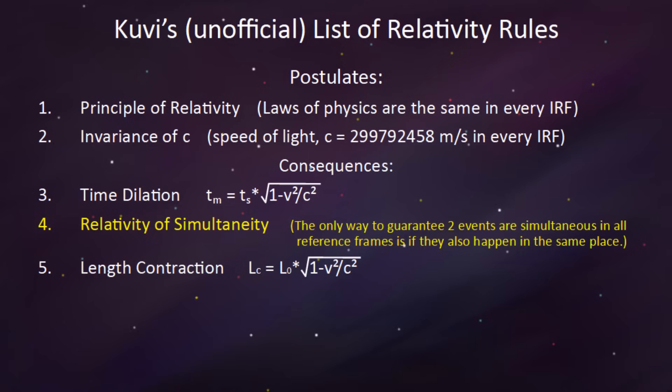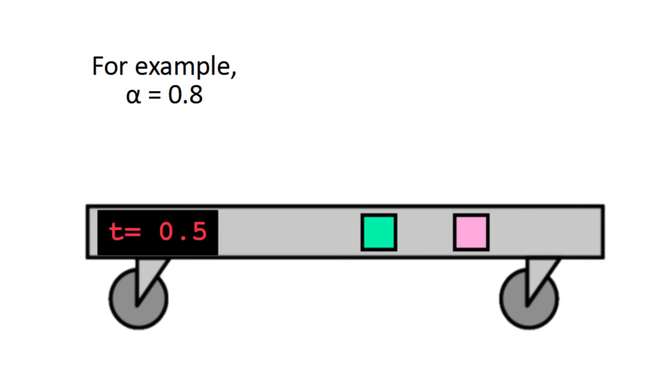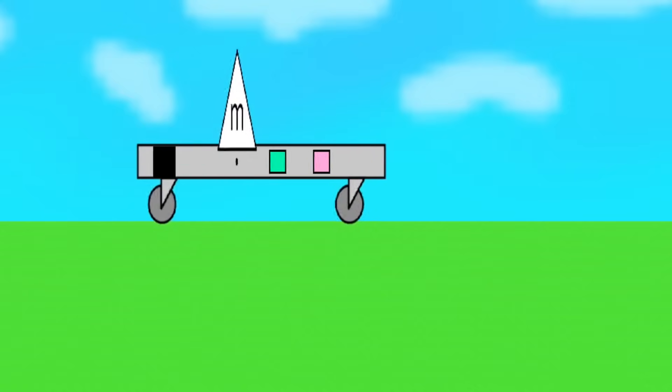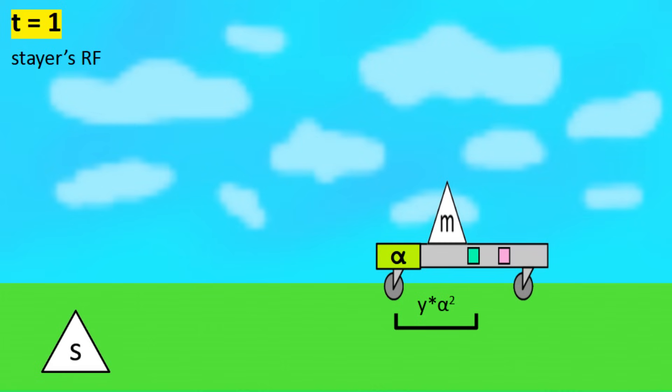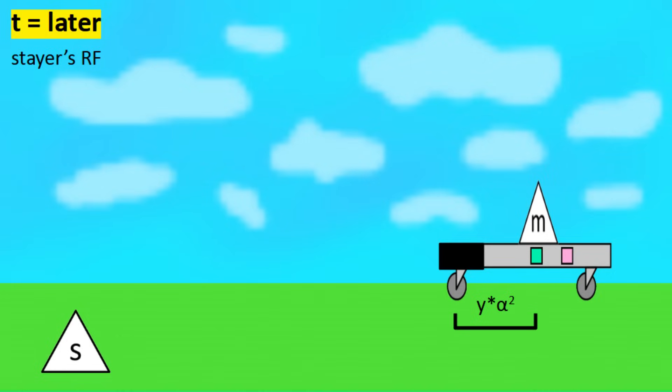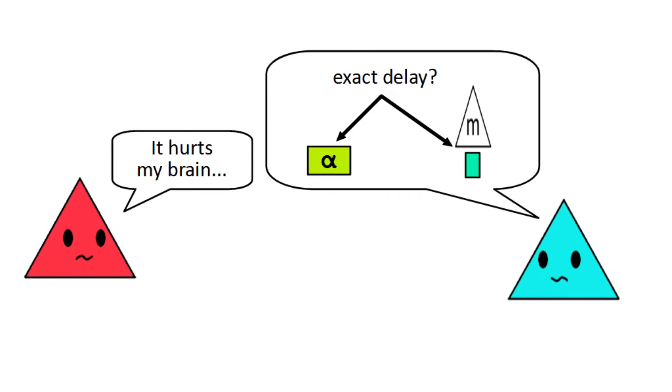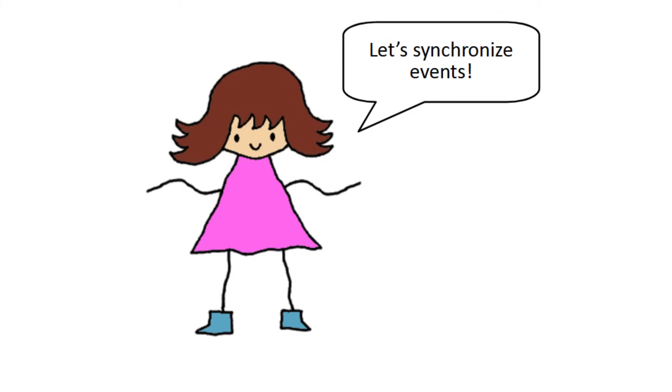We can imagine a timer on the starting square of the platform that blinks once it reaches alpha seconds. Even though the events of the timer blinking and the mover reaching the destination square are simultaneous in the platform's reference frame, they aren't in the stayer's reference frame. So after one second, the timer will in fact say alpha seconds, but the mover won't reach the y times alpha squared square until a bit later. Now you could try to calculate this delay and use it in the formula derivation, but trust me, it gets very confusing. Instead, I prefer to construct examples in such a way that relativity of simultaneity doesn't apply.